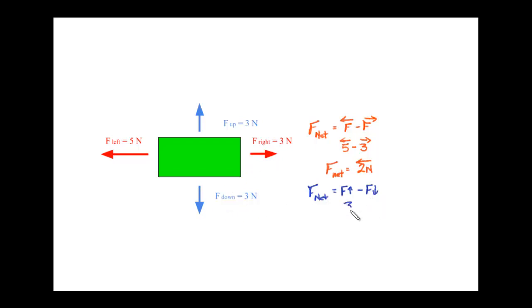So I'm going to go 3 newtons going up minus 3 newtons going down, telling me that the force net in the vertical is 0 newtons. Because it's 0 newtons, I know it is an equilibrium in the y-axis.